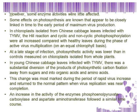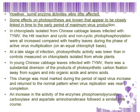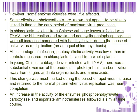In chloroplasts, however, some enzyme activities were little affected. Some effects on photosynthesis are known that appear to be closely linked in time to the early period of maximum virus production. In chloroplasts isolated from Chinese cabbage leaves infected with TYMV, the Hill reaction and cyclic and non-cyclic photophosphorylation were all increased compared with healthy leaves during the phase of active virus multiplication.